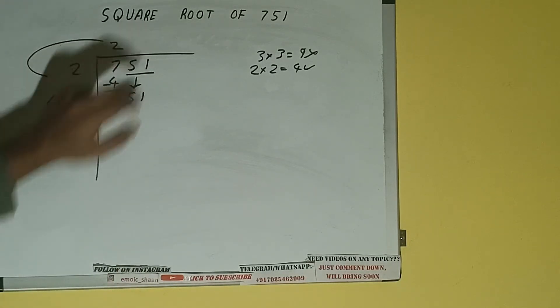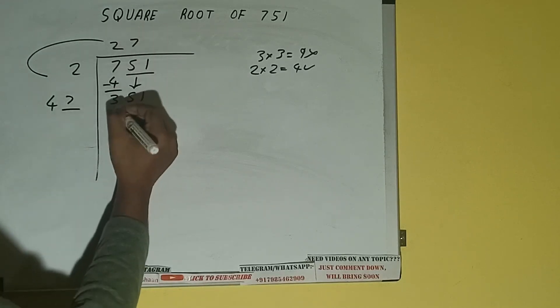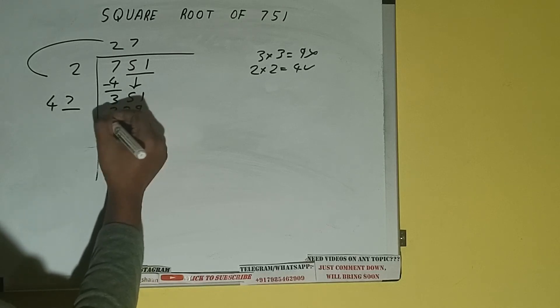Now whatever number we write here, we have to write here also. If we write 7 here and 7 here, it will be 329. Subtract.